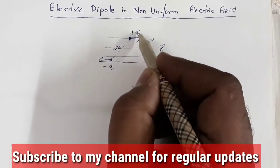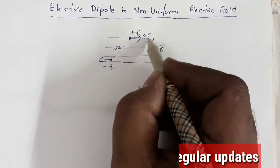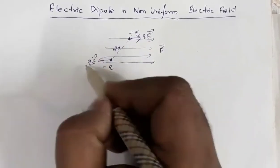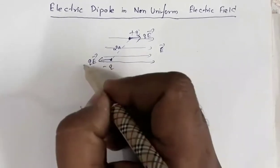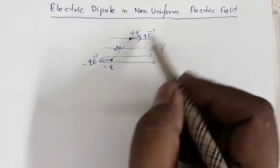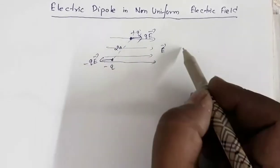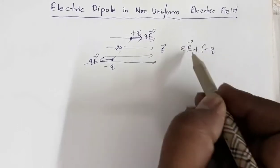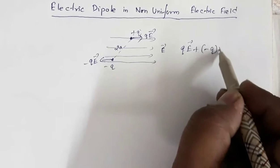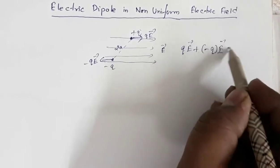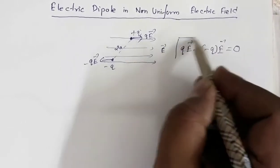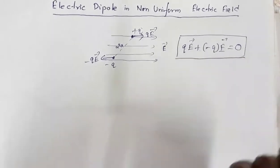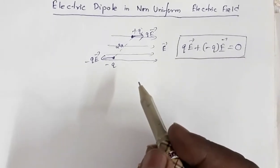The force on the positive charge is QE and the force on the negative charge is -QE, so the total force is QE + (-QE) = 0. Basically, if a dipole is placed in a uniform electric field, the net force on the dipole will always be zero. But what happens if the dipole is placed in a non-uniform electric field?